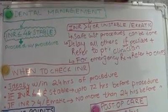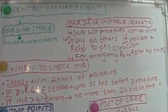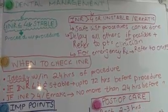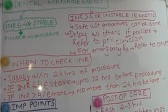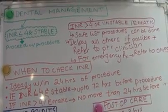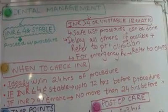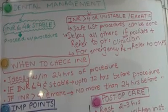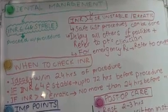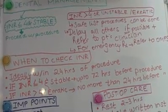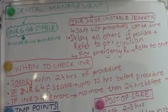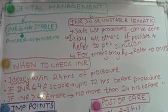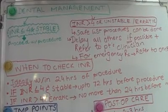Now coming to the management of patients who are taking anticoagulants. INR is the international normalized ratio and what it measures is the prothrombin time. INR is the ratio of the patient's prothrombin time divided by the normal prothrombin time, giving you an idea of how poor the patient's clotting and coagulation may be. If the INR is higher, meaning the patient's INR is a lot more than normal, then there is more risk of the patient bleeding excessively.